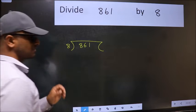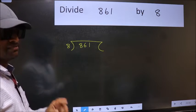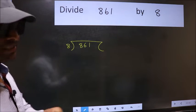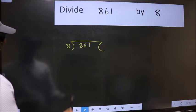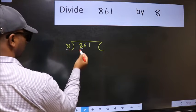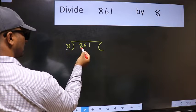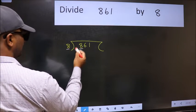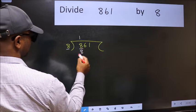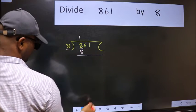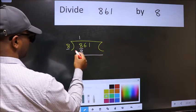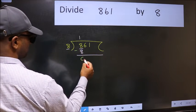This is your step 1. Here we have 8 and here 8. When do we get 8 in the 8 table? 8 once is 8. Now we should subtract. We get 0.